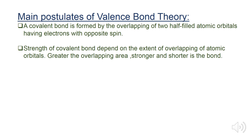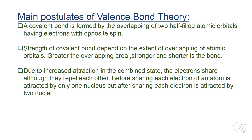The strength of a covalent bond depends on the extent of overlapping of atomic orbitals. Greater the overlapping area, stronger and shorter is the bond. Due to increased attraction in the combined state, the electrons share although they repel each other.